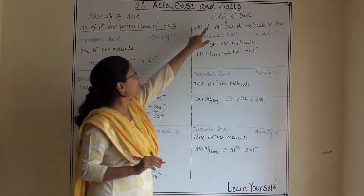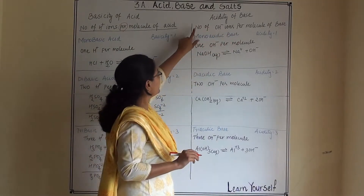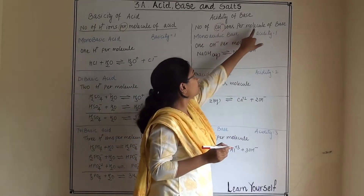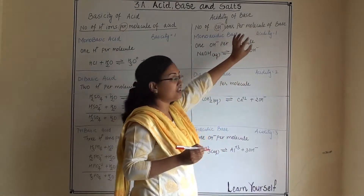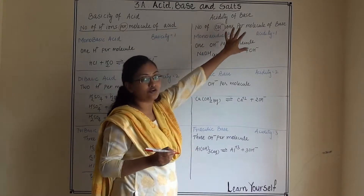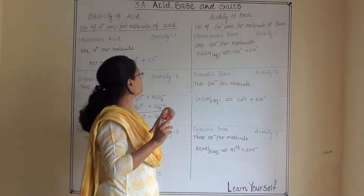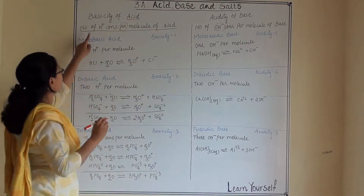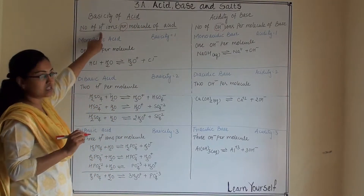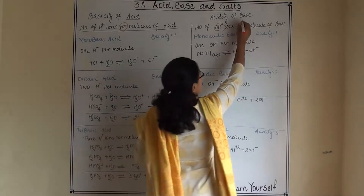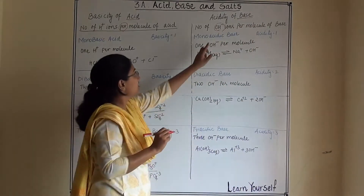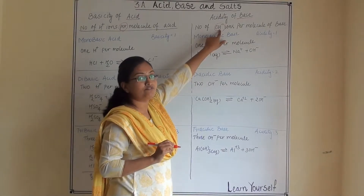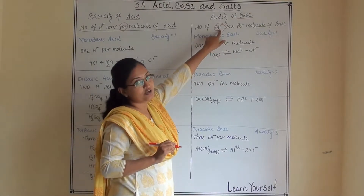Now what is the meaning of acidity of base? The number of OH- ions per molecule of base that is generated is referred to as acidity of base. Don't get confused — when we are writing acid, see the number of H+ ions; when we are writing base, we look at the number of OH- ions.